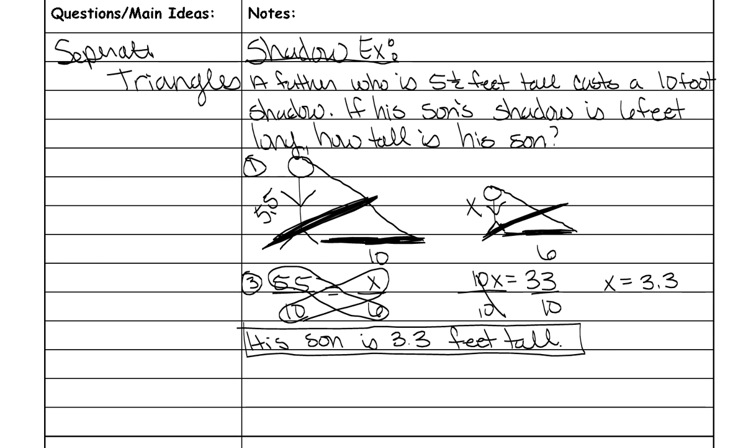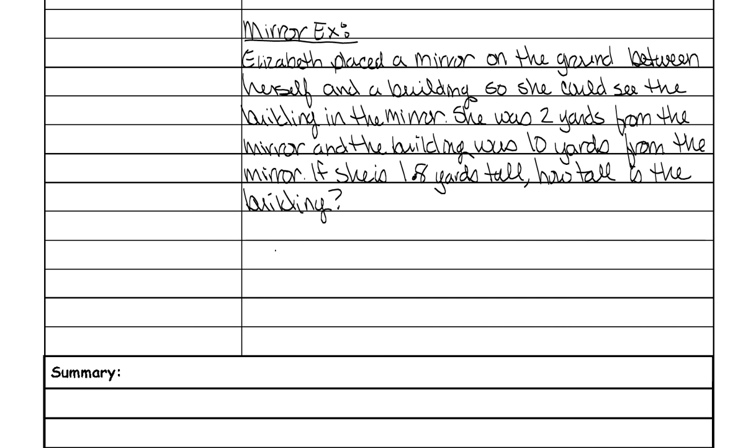The next problem we're going to go over is a mirror example. And here's an example of that. So here's our example. Elizabeth placed a mirror on the ground between herself and the end of building. So she could see the building in the mirror. It's actually the top of the building. You have to be able to see the top. She was two yards from the mirror and the building was 10 yards from the mirror. If she is 1.8 yards tall, how tall is the building?